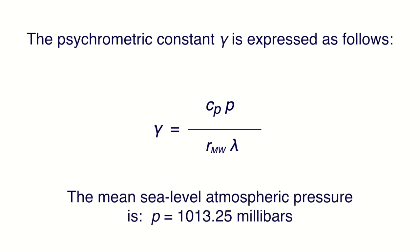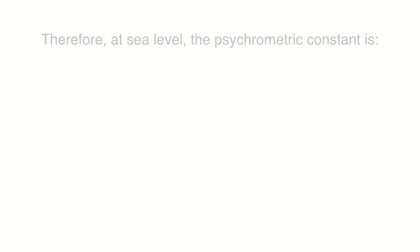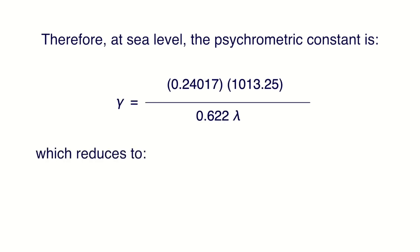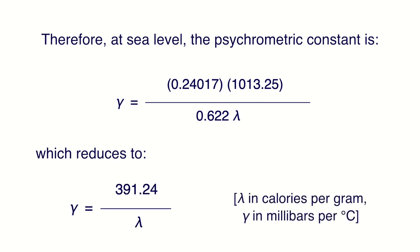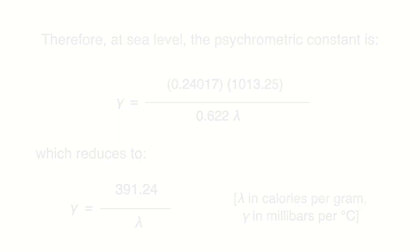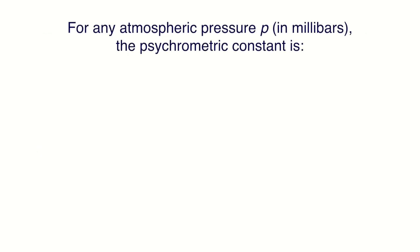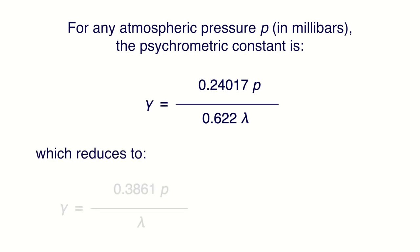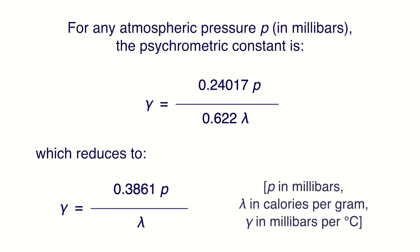The mean sea level atmospheric pressure is P equal to 1013.25 millibars. Therefore, at sea level, the psychrometric constant reduces to an expression with lambda in calories per gram and gamma in millibars per degree Celsius. For any atmospheric pressure P in millibars, the psychrometric constant reduces to an expression with P in millibars, lambda in calories per gram, and gamma in millibars per degree Celsius.